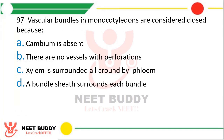Question number 97: Vascular bundles in monocotyledons are considered closed because — Option A: Cambium is absent. Option B: There is no vessel with perforation. Option C: Xylem is surrounded all around by phloem. Option D: A bundle sheath surrounds each bundle. The vascular bundles in monocots are considered closed because — the correct answer is option A, because the cambium is absent.